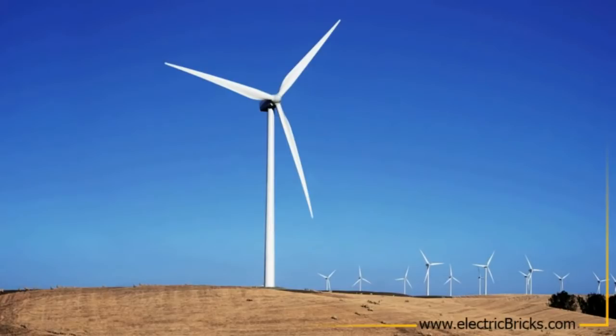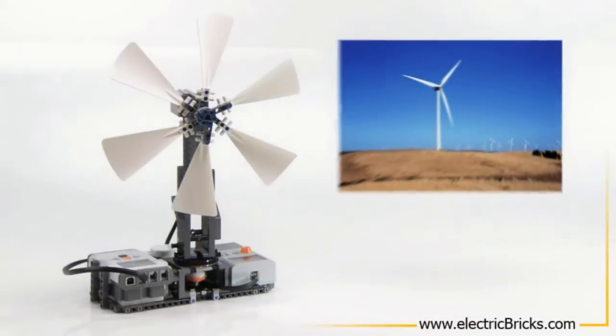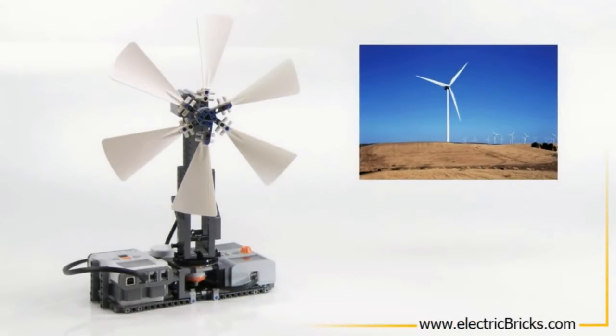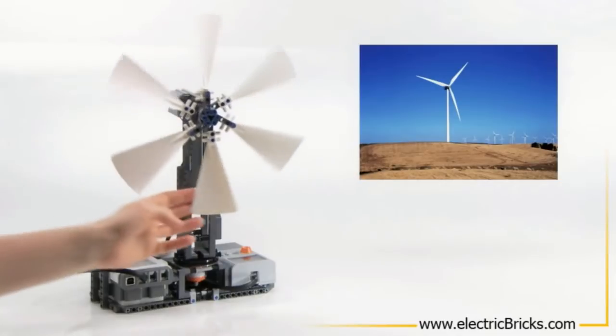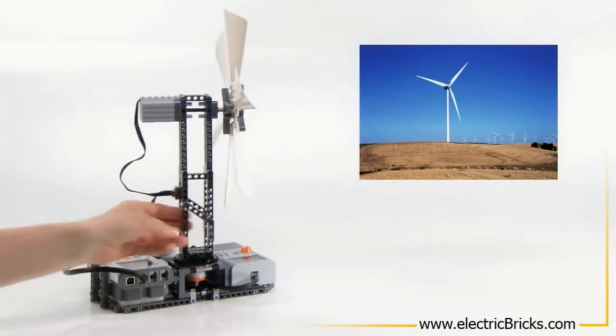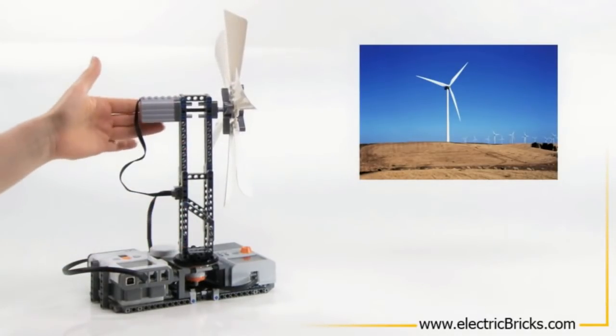The main components of a wind turbine are the blades, the tower, and the generator. The NXT wind turbine has exactly the same components: blades, a tower, and the e-motor which works as a generator.